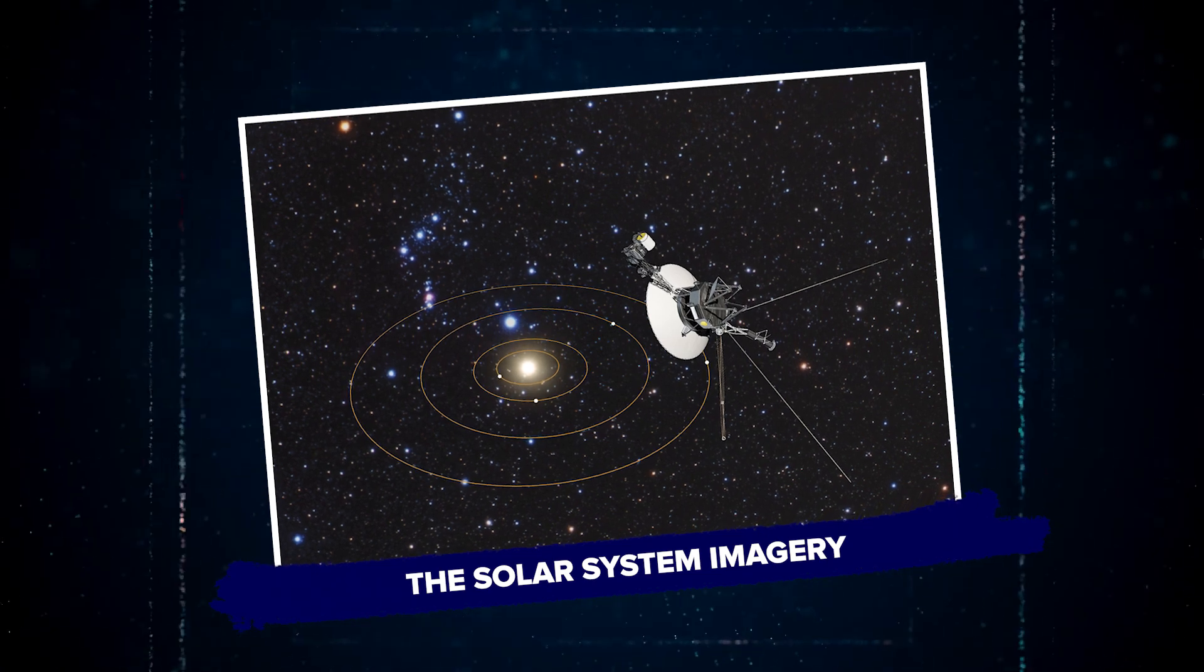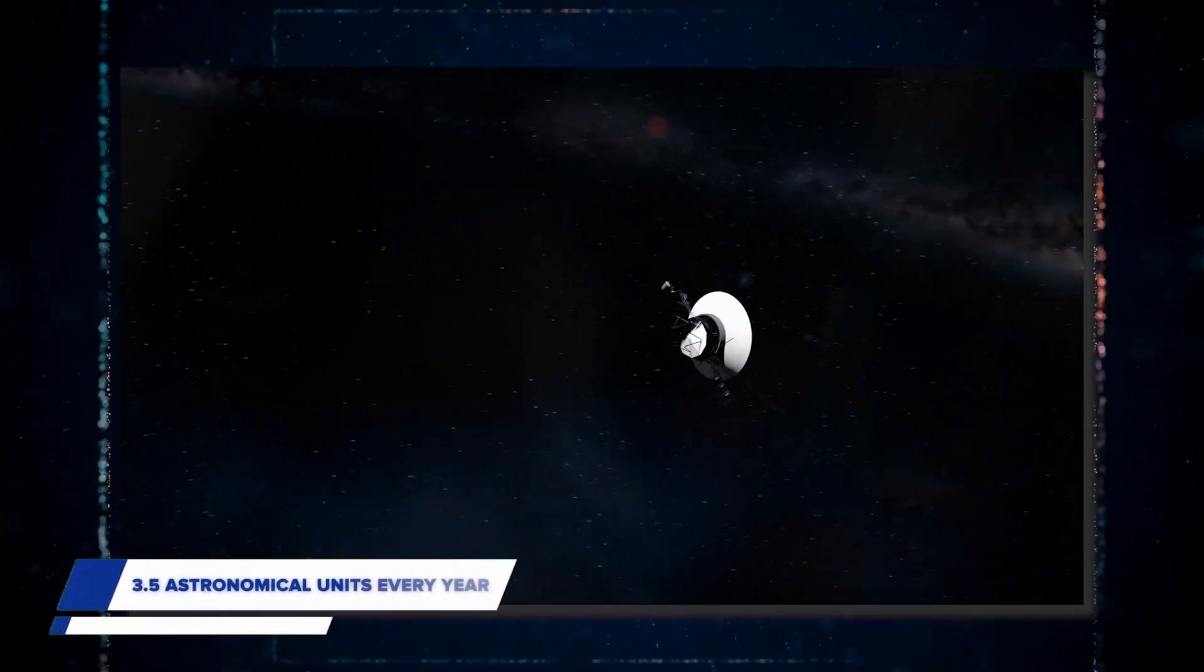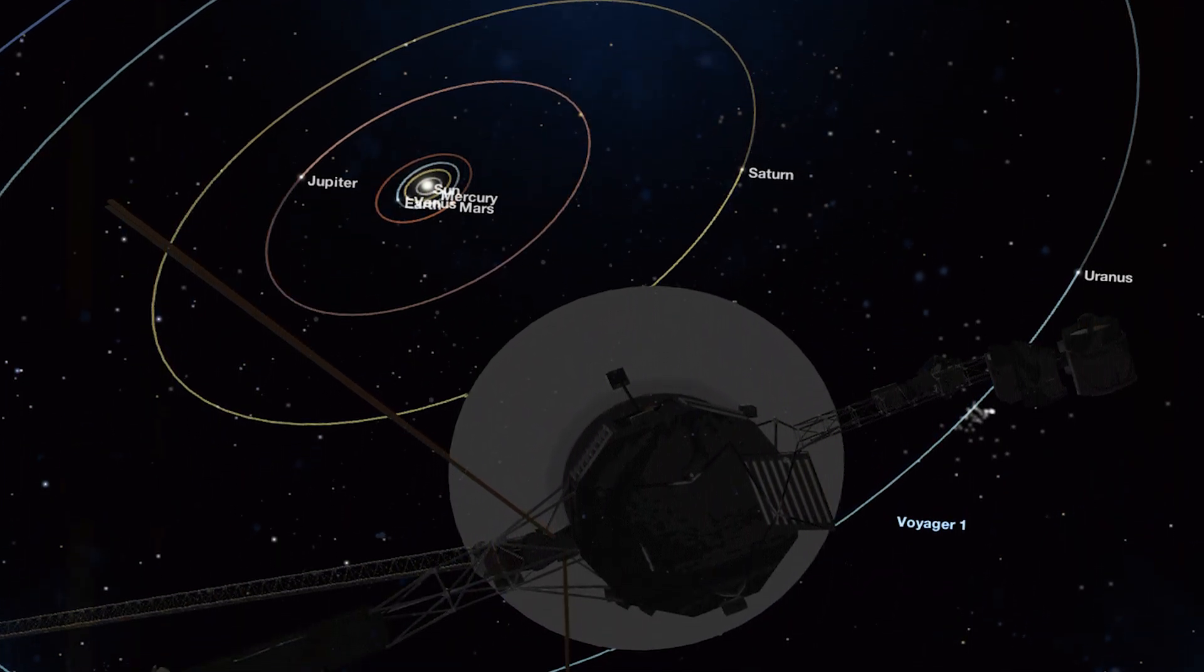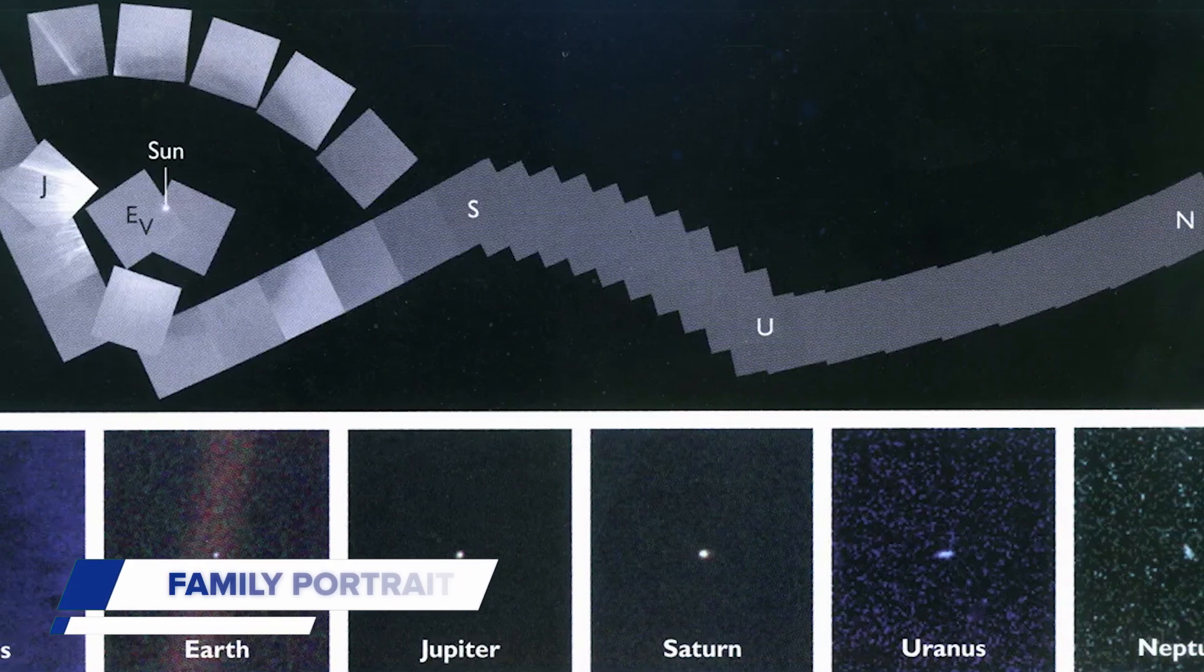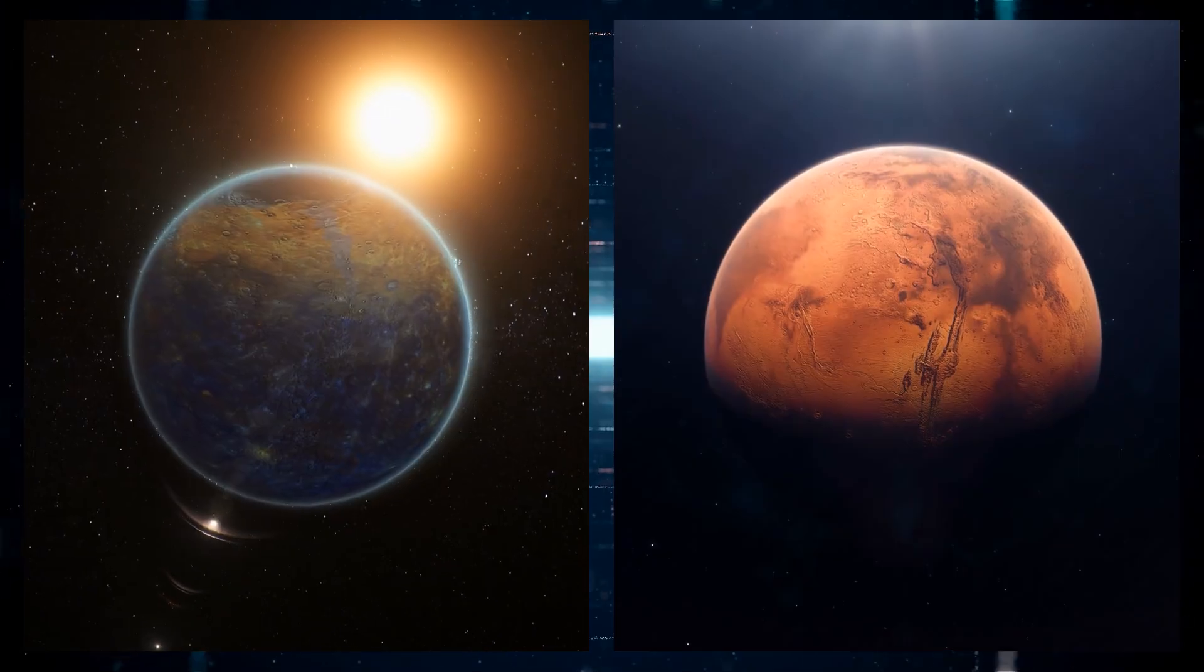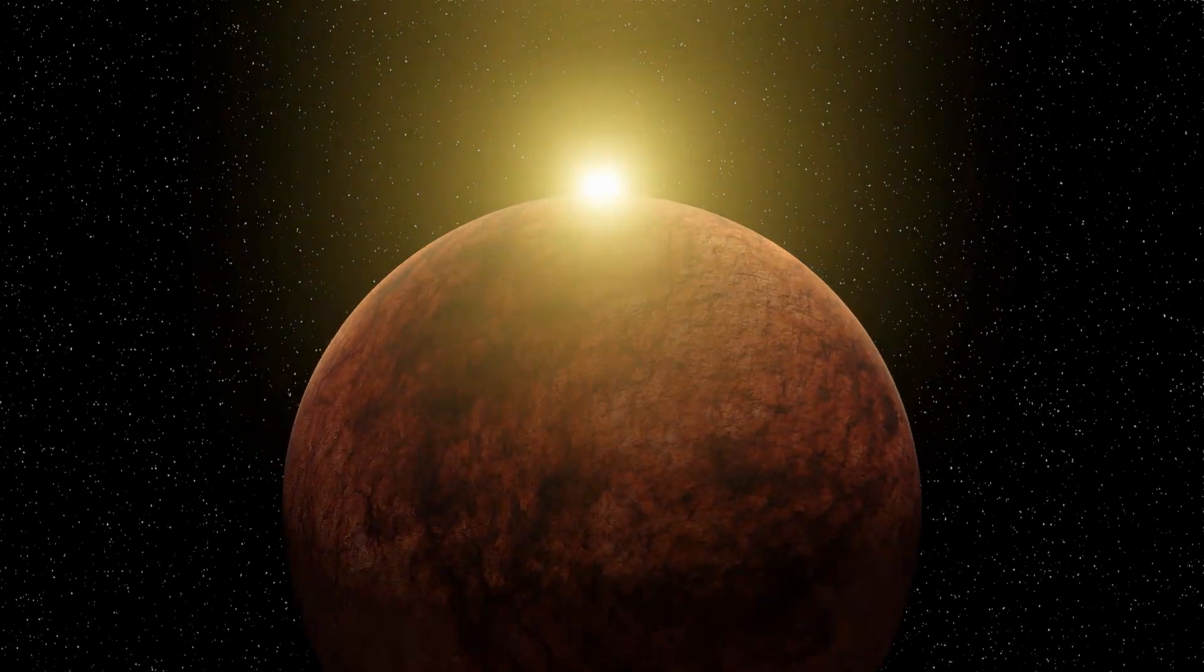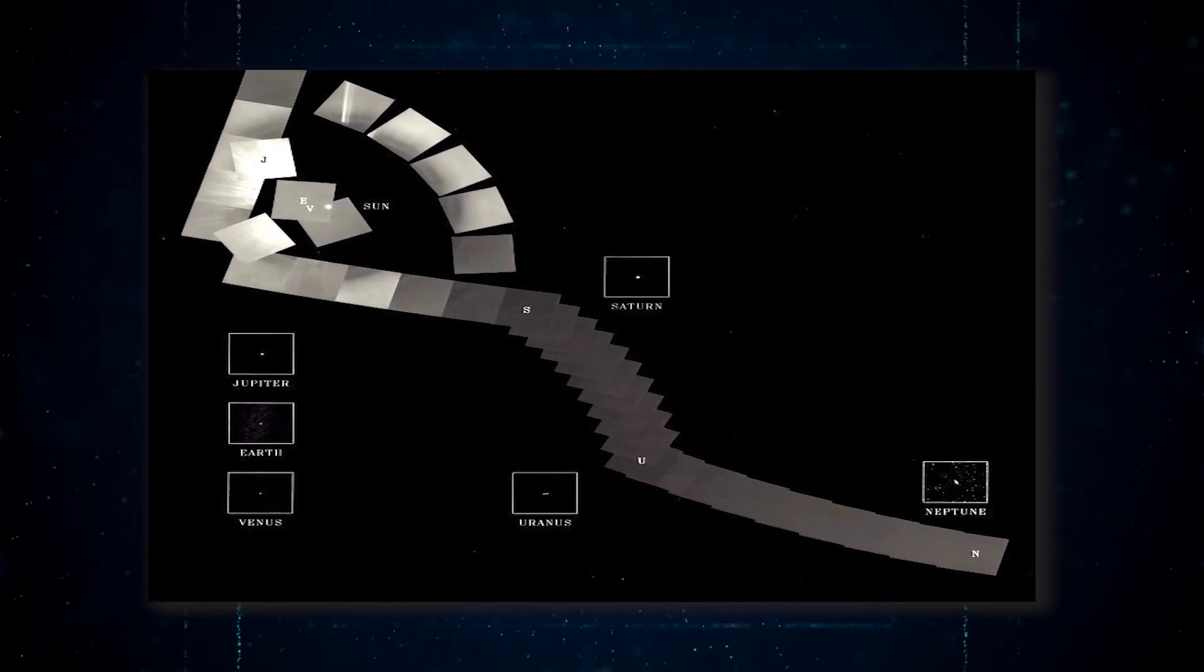The solar system imagery. After passing Saturn, Voyager 1 continued its journey out of the solar system. It moved at a speed of about 3.5 astronomical units every year, heading away from the planets and out into space. In February 1990, when it was far from home, Voyager 1 turned its camera back towards the solar system for one last look. This special moment led to a series of 64 pictures that created a family portrait of the planets as seen from Voyager 1's distant viewpoint, about 40 AU from the Sun. In this unique collection of images, two planets, Mercury and Mars, were missing. Mercury was too close to the Sun's bright light to be seen. And Mars was hidden in the Sun's shadow from Voyager 1's perspective, showing only its dark side to the camera. Despite these missing pieces, the images captured were historic.